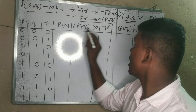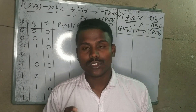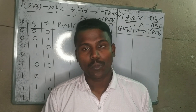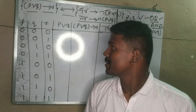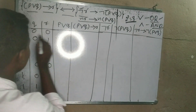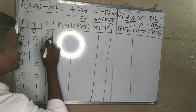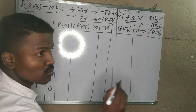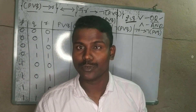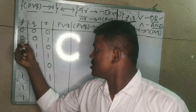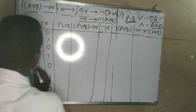For the AND condition in the truth table: both conditions true gives true; both conditions false gives false. For the OR condition: if you have false or true, the result is true. This is the concept for columns P, Q, and R.